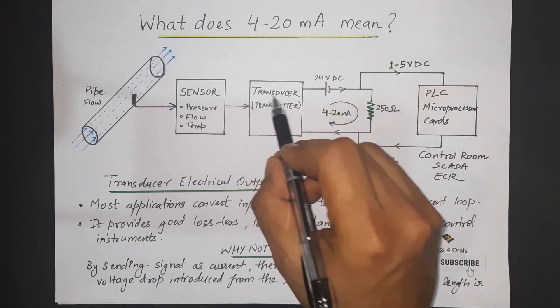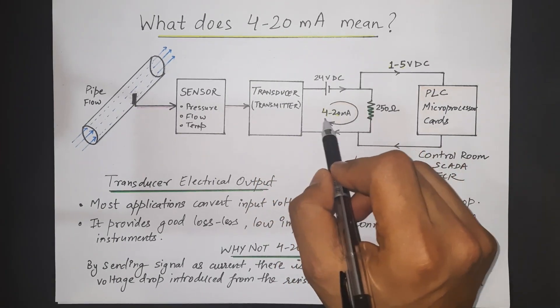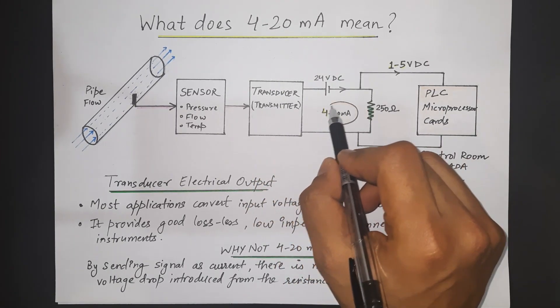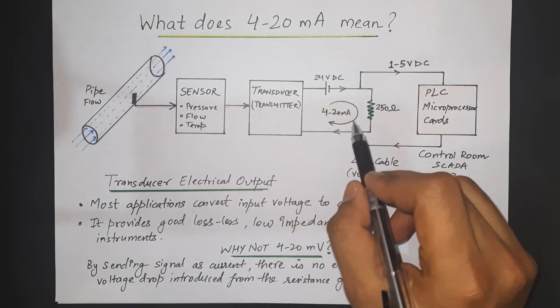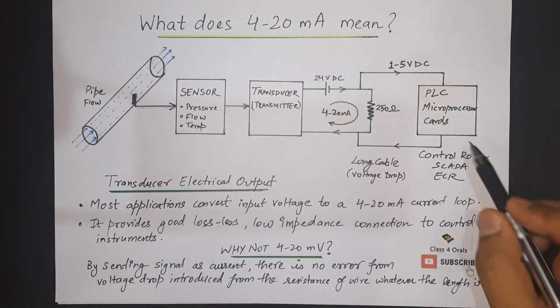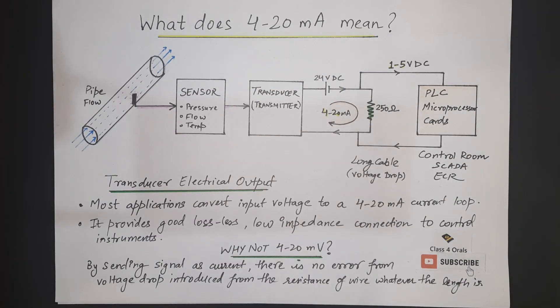So this transducer is going to create a 4 to 20 mA range of the current. And that 4 to 20 mA loop will be created which is going to go to the microprocessor which we are going to further measure what is the actual value of the water pressure.